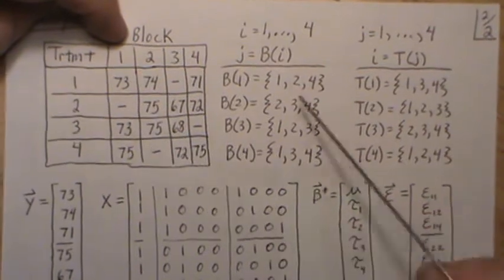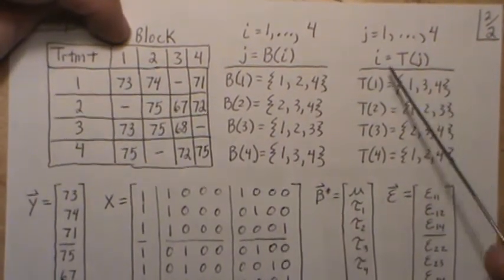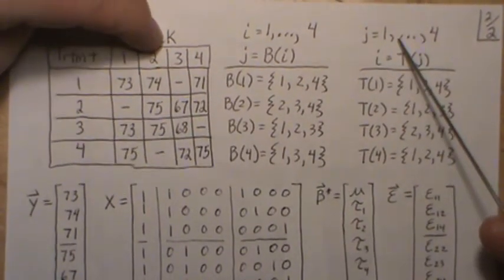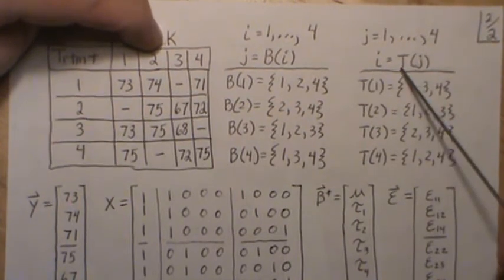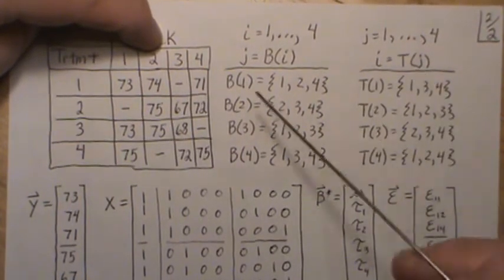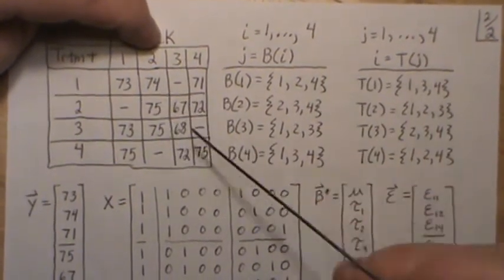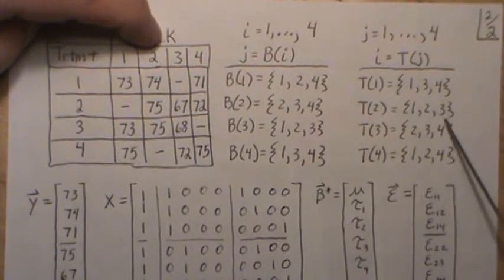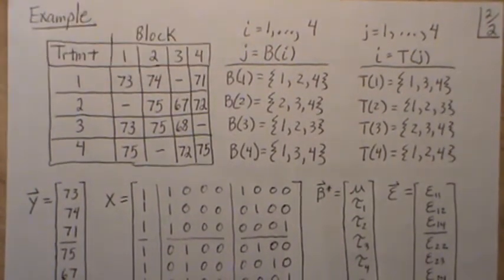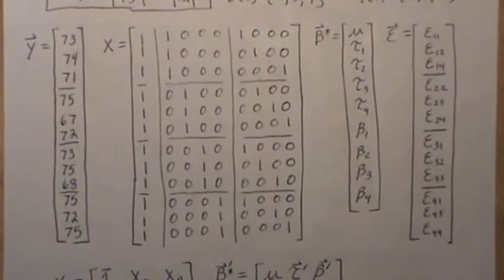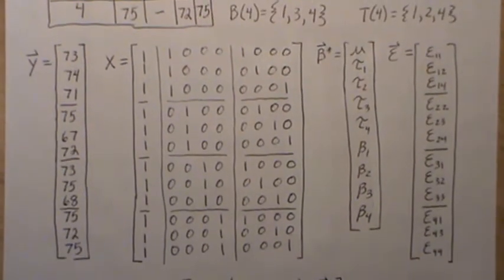J equals two, i equals T(2). The treatment assignments are one, two, and three (one, two, and three), and then similar for three and four.